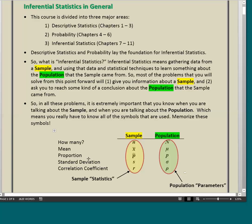What about mean or average? If you're talking about the mean of a sample, the symbol for that is x-bar. Whereas the mean of a population, the symbol for that is this Greek letter which is called mu.